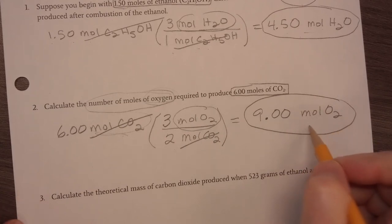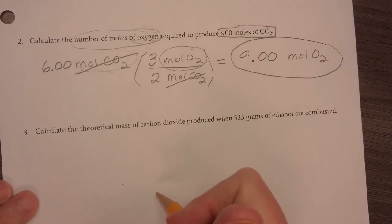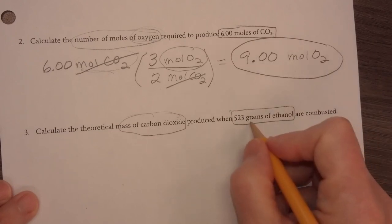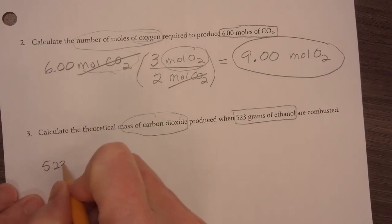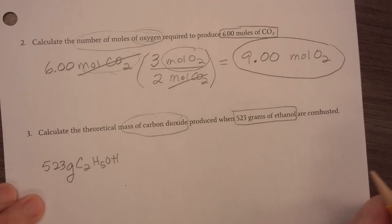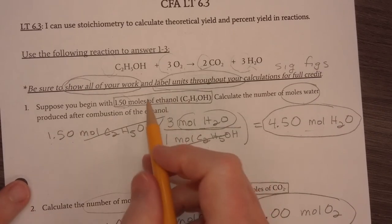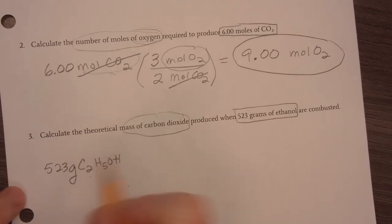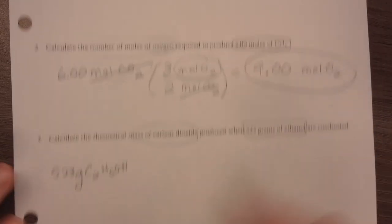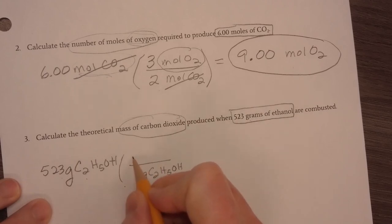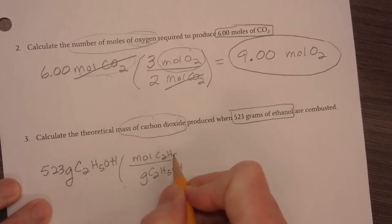The next one says calculate the theoretical mass of carbon dioxide. That's what I want to find, mass of carbon dioxide, when I have 523 grams of ethanol combusted. So this is my given, 523 grams of ethanol, C2H5OH. Now, I have, again, a balanced chemical equation. I have to convert grams to moles before I can do the mole ratio. And to find that, I need to divide by the molar mass because I need the grams of ethanol to divide out.